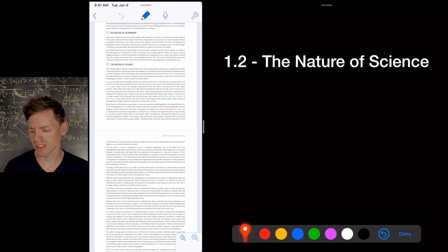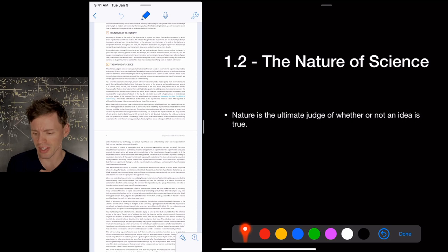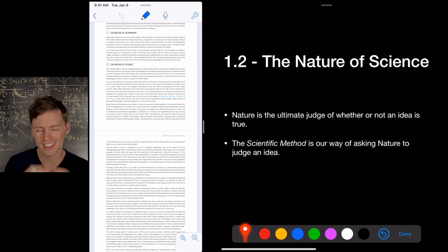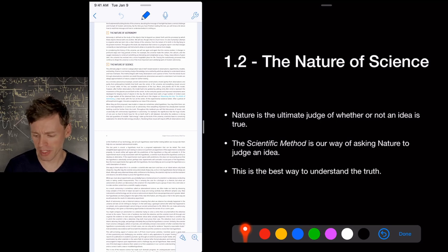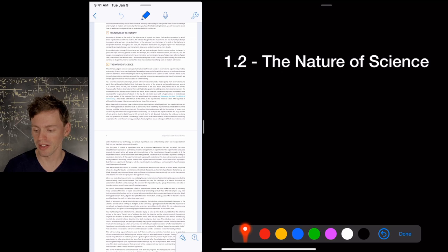The nature of science. What is science? It's the ultimate judge. Science uses nature as the ultimate judge of whether or not an idea is true. Okay, the scientific method is our way of asking nature to judge an idea. We have an idea. We want to see, is it real? Is it valid? So we conduct an experiment. It's the best way to understand the truth. If you want to understand something that's happening to you in your life, apply the scientific method, and that gives you more power to control the events that are occurring.